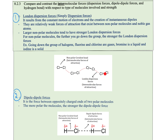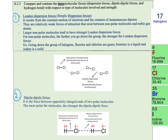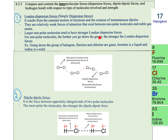Since all atoms have electrons, London dispersion forces exist in all types of molecules, whether nonpolar or polar. In general, larger nonpolar molecules tend to have stronger London dispersion forces. For example, going down group 17 — the halogens — from fluorine to chlorine, then to bromine and iodine, the London dispersion forces get stronger. That's why fluorine and chlorine are gases, bromine is a liquid, and iodine is a solid, because the particles get closer as you move down the group.